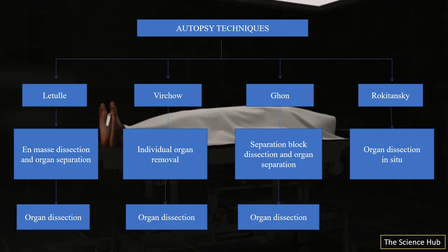The Rokitansky technique is an in-situ, or local, dissection that starts at the neck and trails down, with organs removed as a block. The first cut pierces the larynx to separate the esophagus and pharynx from the larynx and trachea, followed by the chest organs which are cut to expose and dissect the abdomen.